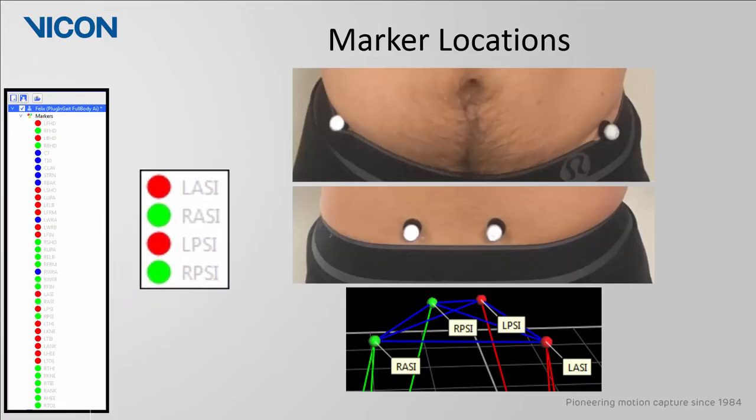The next segment is the pelvis or the root of the subject. The two ASIS markers will be placed on the anterior superior iliac spine and the two PSIS markers will be placed on the posterior superior iliac spine immediately below the sacroiliac joints at the point where the spine joins the pelvis.